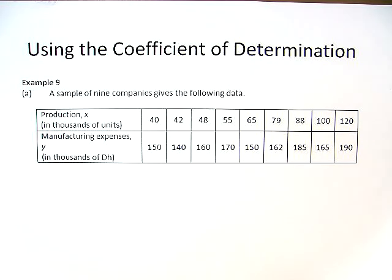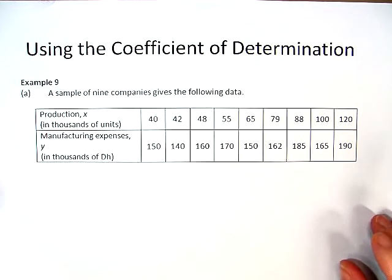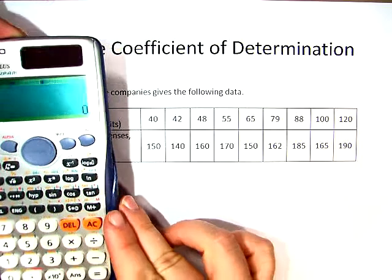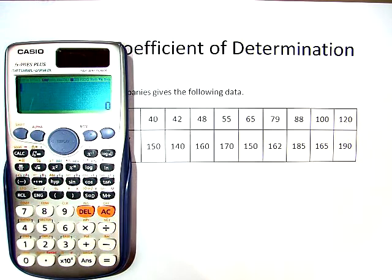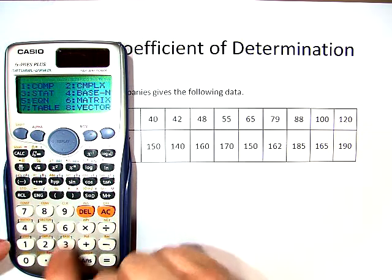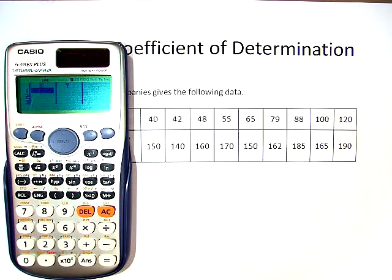We're going to use the coefficient of determination. But in order to do this, we need to find the coefficient of correlation. Now, just like with all of our other problems, we need to put the data into the calculator. So in the top we have x, and in the bottom we have y. We get our calculator out, and in order to go where we need to, we hit mode, stat, and a plus bx, just like before.